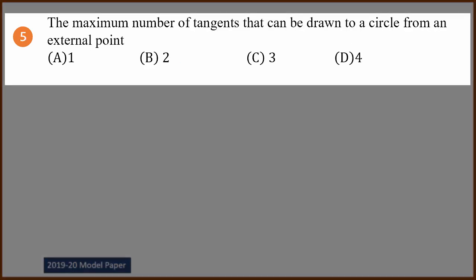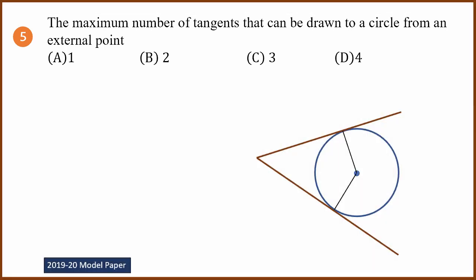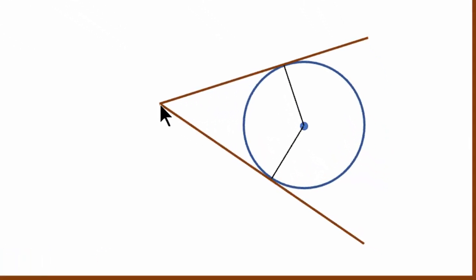Fifth question: the maximum number of tangents that can be drawn to a circle from an external point. From any external point, you can draw two tangents to the circle. The answer is two.